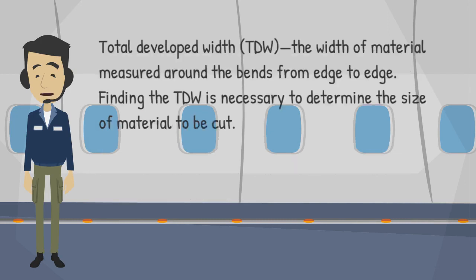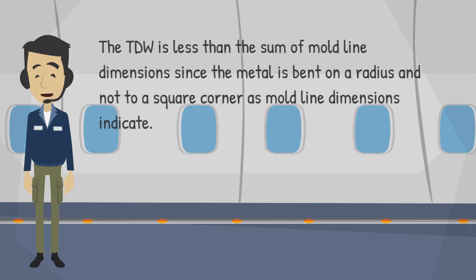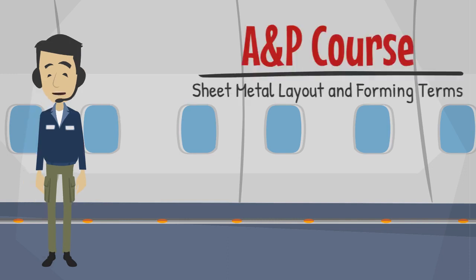Total developed width (TDW): the width of material measured around the bends from edge to edge. Finding the TDW is necessary to determine the size of material to be cut. The TDW is less than the sum of mold line dimensions, since the metal is bent on a radius and not to a square corner as mold line dimensions indicate. This concludes this training session.